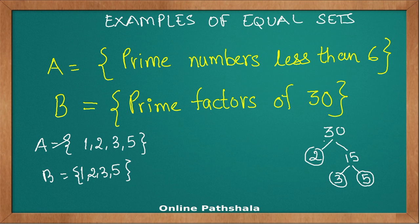1 doesn't make any difference. 1 is definitely a prime factor for 30. Therefore, we can say that set A is equal to set B.